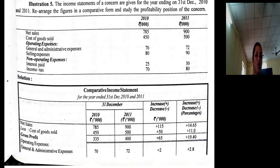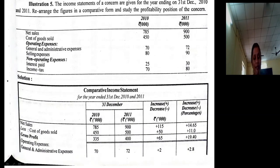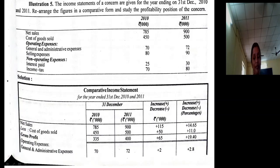Net sales is given, cost of goods sold is given, operating expenses are given, non-operating expenses are given — the problem is very specific. So have a format of comparative income statement. There are 4 amount columns: one for 2010 and one for 2011, then increase or decrease in absolute figure, and increase or decrease in percentage.